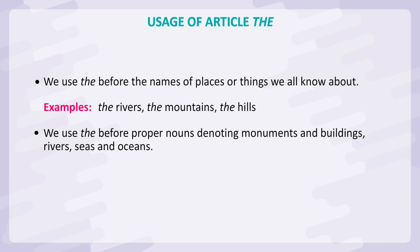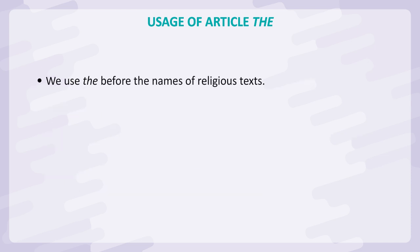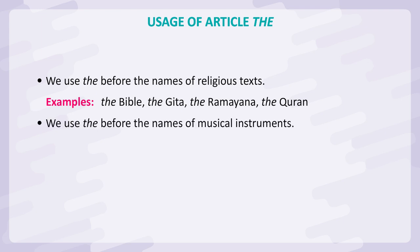We use the before proper nouns denoting monuments and buildings, rivers, seas and oceans. Examples: The Gateway of India, The Red Fort, The Yamuna, The Arabian Sea, The Atlantic Ocean. We use the before the names of religious texts. Examples: The Bible, The Gita, The Ramayan, The Quran.